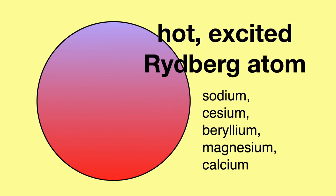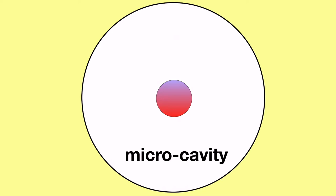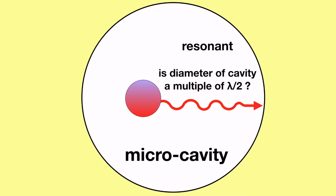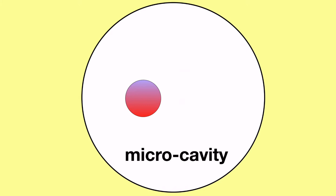You can take a Rydberg atom, such as sodium, cesium, magnesium, or calcium, and heat it in an oven, and then use a laser to excite the outer electron to a higher energy state, and then inject the atom into a micro cavity. The outer electron will drop to a lower energy level and emit a photon 500 times faster if the mode of the cavity or the available states are resonant than if they're not. Resonant means that the diameter of the cavity is a multiple of λ/2, where lambda is the wavelength of the photon that would be emitted.